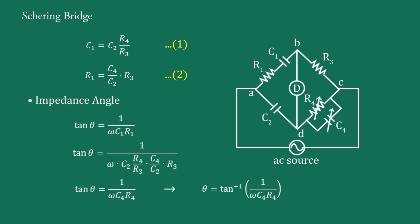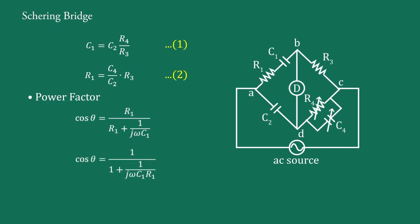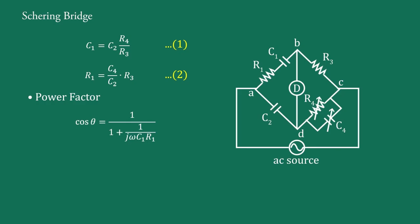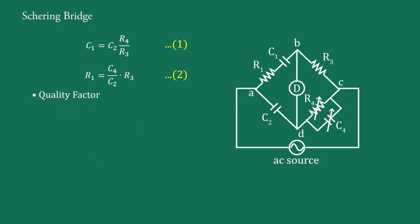The second parameter is the power factor, defined as cos θ = R1 / (R1 + 1/(jωC1)). Substituting the values of C1 and R1 from Equations 1 and 2, we get cos θ = 1 / (1 + 1/(ω · (C2·R4/R3) · (C4·R3/C2))). The R3 and C2 terms cancel, giving power factor cos θ = 1 / (1 + 1/(ωC4·R4)).